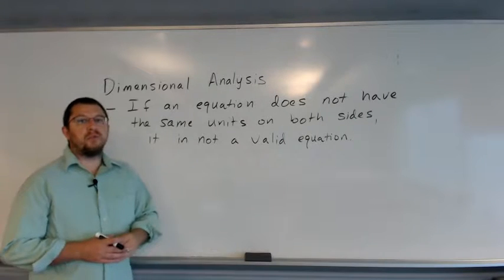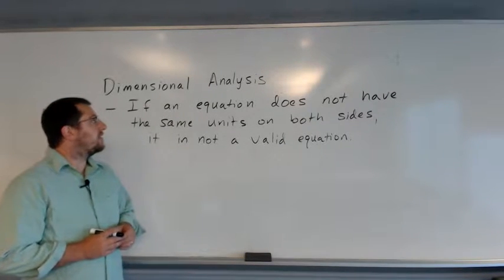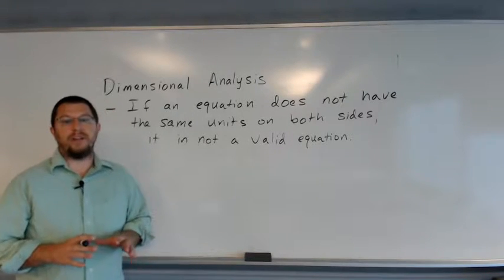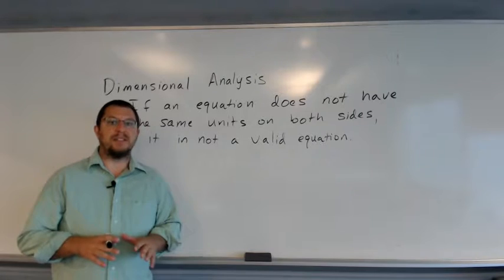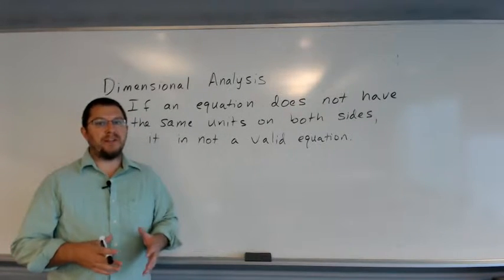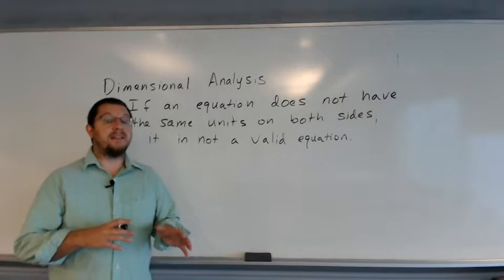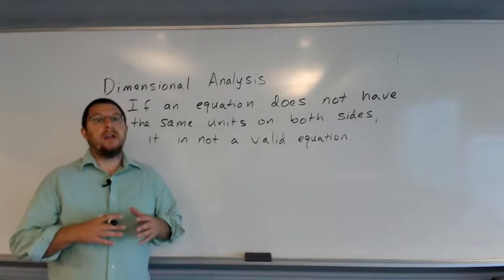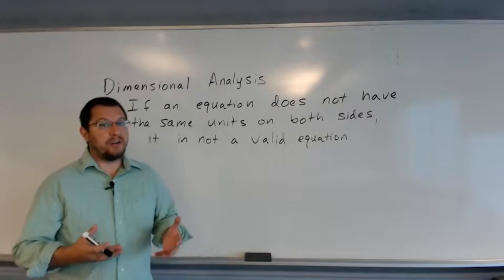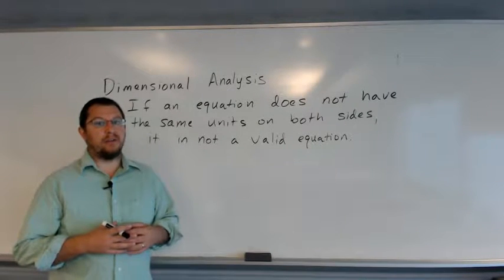This first rule is of paramount importance. If an equation does not have the same units on both sides, it is not a valid equation. I cannot stress this enough. If you do not have the same units on both sides of your equation, your equation is wrong. The converse is not necessarily true — if your units match on both sides, that does not necessarily mean your equation is correct, but it means at least that you're on the right track.